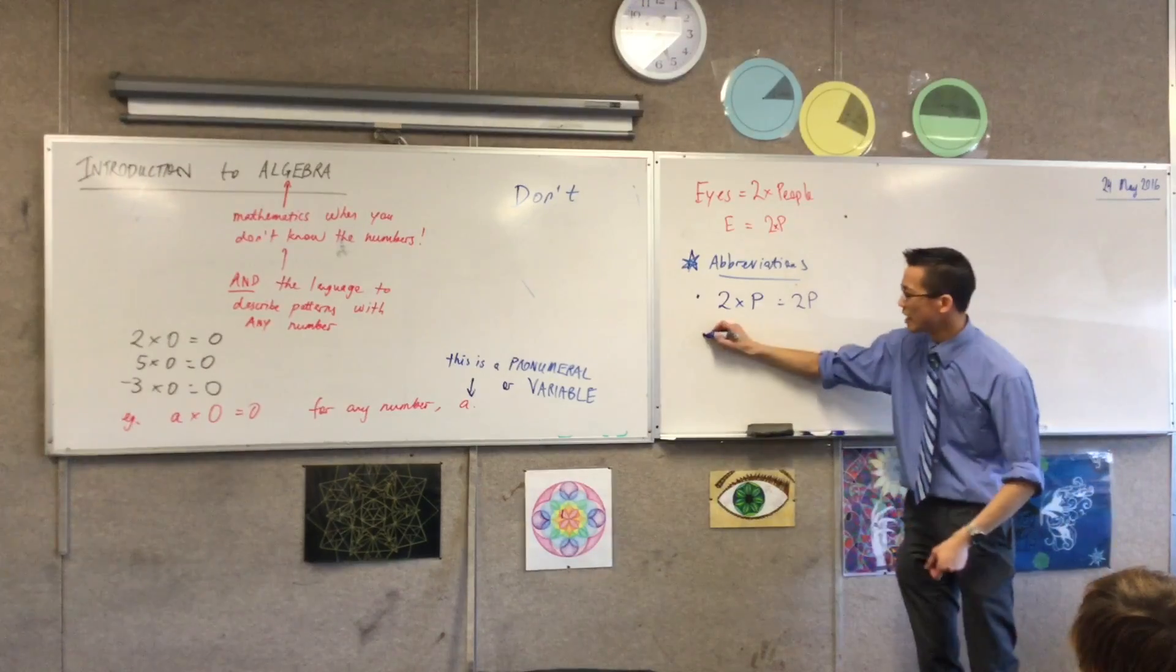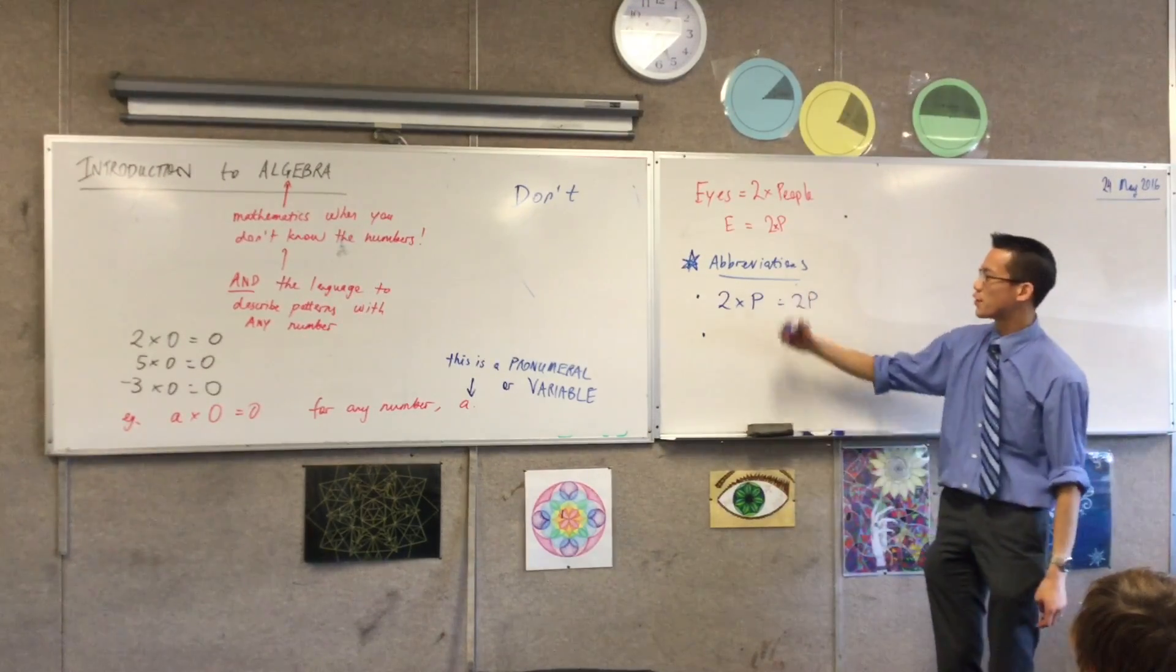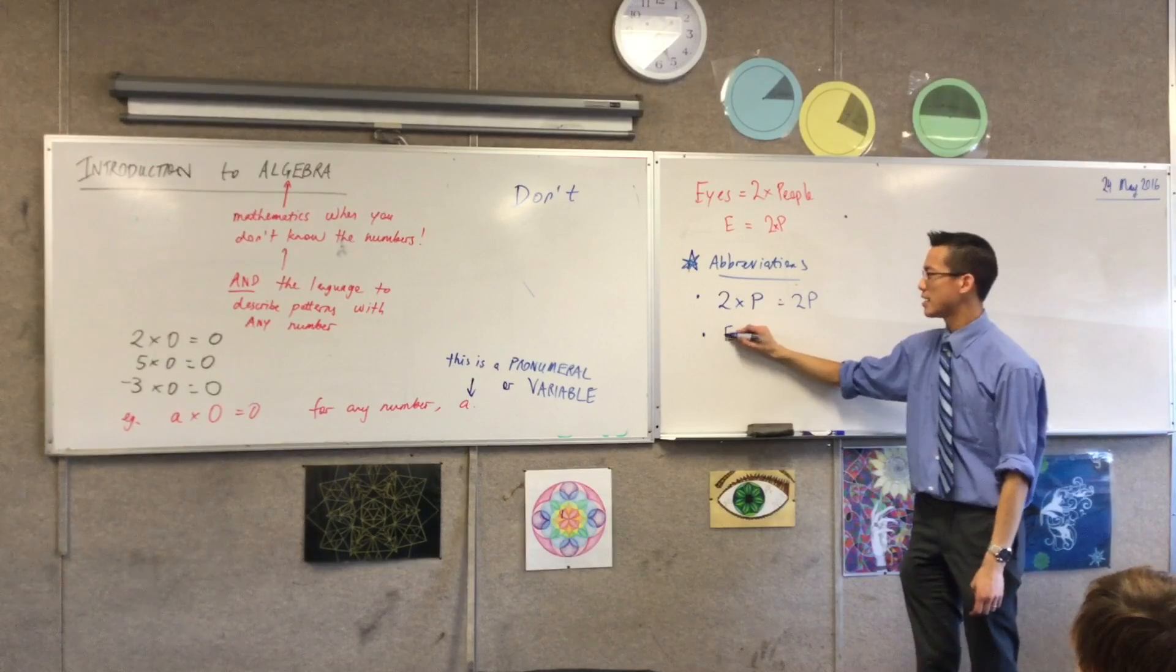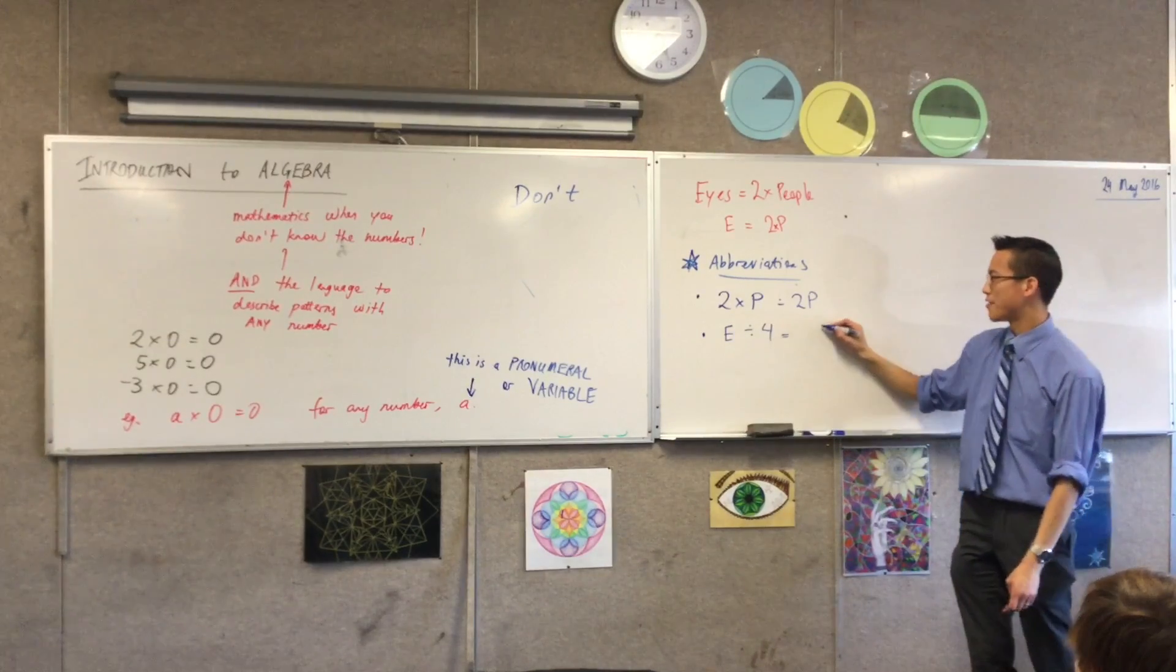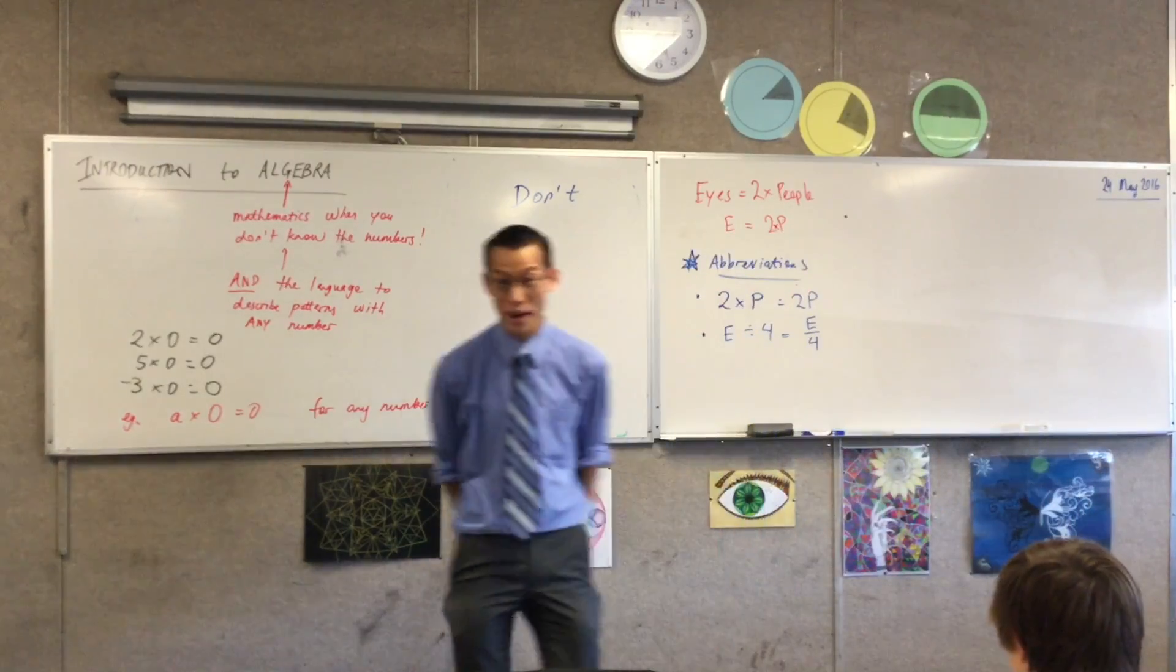In the same way, we know that if you've got like division, we already have the fraction symbol you're familiar with. So for instance, I might say E divided by four. I could write that as E on four. And that's an abbreviation you're already very familiar with.